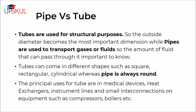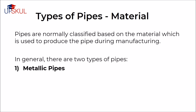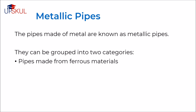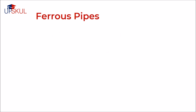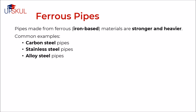Pipes are normally classified based on the material which is used to produce the pipe during manufacturing. In general, there are two types of pipes: metallic pipes and non-metallic pipes. The pipes made of metal are known as metallic pipes and they are grouped into two categories: pipes made from ferrous materials and pipes made from non-ferrous materials. The types of pipes made from ferrous materials are stronger and heavier. These pipes have iron as their main constituent and some of the most common examples are carbon steel pipes, stainless steel, alloy steel, DSS, cast iron pipes, ductile iron pipes, etc.